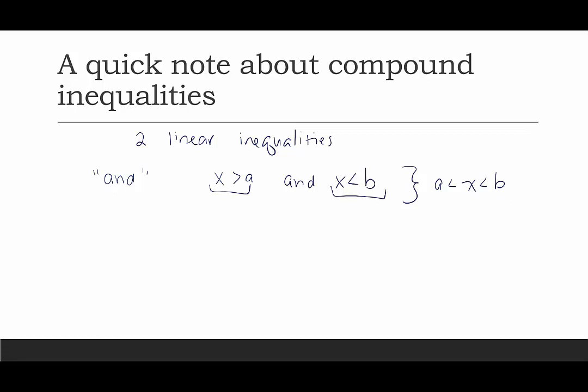When we have this type of inequality with three parts — which is called a compound inequality in and of itself — if you do something to get X by itself, you do it to all three sides. For example, if X minus 2 is in the middle, you would add 2 to the left, add 2 in the middle to X, and add 2 to B on the right. Whatever you do, you have to do to all three sides.